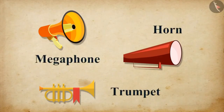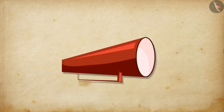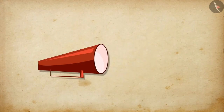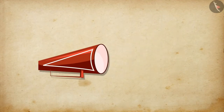Megaphones, horns, and musical instruments such as trumpets use multiple reflections. They are designed to send sound in a particular direction without spreading it in all directions. These instruments have a tube followed by a conical opening, which reflects sound successively. It guides the sound waves from the source in the forward direction towards the audience.